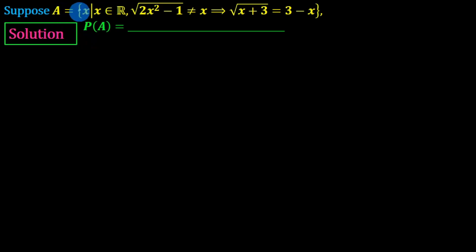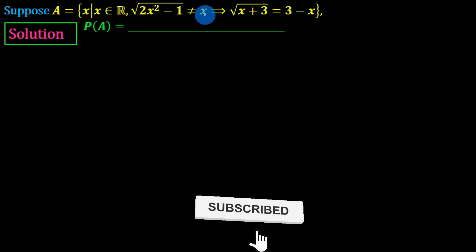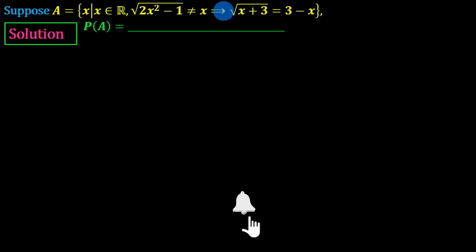Suppose the set is equal to the set of contents: x is an element of the real number, square root of 2x squared minus 1, different from x minus 1, because there is square root of x plus 3 is equal to 3 minus x minus 1.